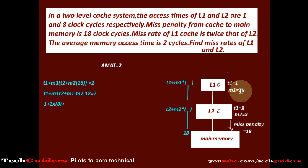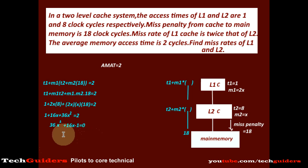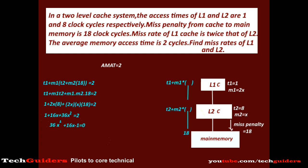With M1 equals 2X and M2 equals X, substituting all values gives 36X² plus 16X minus 1 equals 0. Solving using the quadratic formula: X equals (−16 ± √(16² − 4·36·(−1))) / (2·36). The value of X is 1/18. Hence the miss rate for L2, M2, equals 1/18, and the miss rate for L1, M1, equals 2X = 1/9.